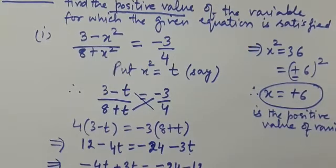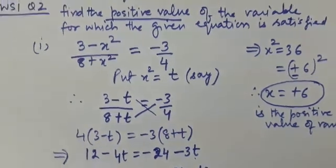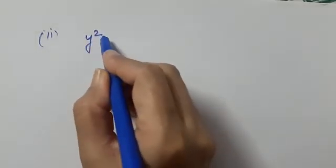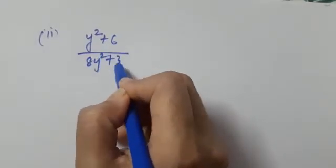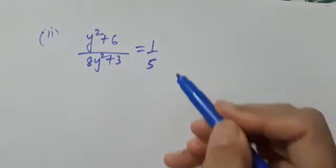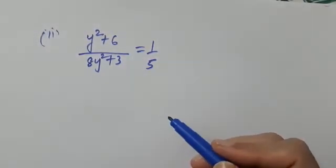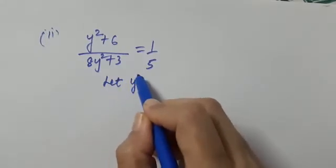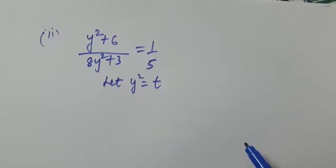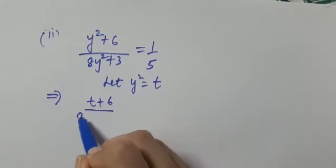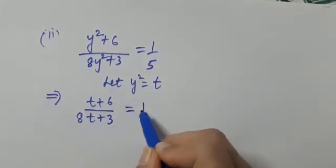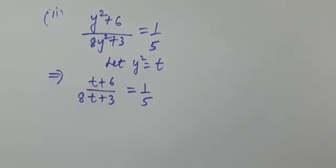Let us now do the second part of this question. The equation is (y² + 6) / (8y² + 3) = 1/5. How are you going to do this? Yes — first step: assume y² = t. So the equation becomes (t + 6) / (8t + 3) = 1/5.